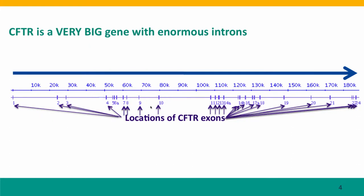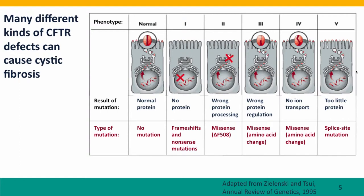The next slide shows the effects of different kinds of mutations on the function of this protein. Starting with a normal individual: no mutation produces a normal protein. The gene is transcribed into RNA, the RNA is spliced into messenger RNA, it's translated into protein, and that protein is then processed through a series of modifications in the cytoplasm before it's finally inserted into the membrane where it can function. In individuals with frameshift mutations or with nonsense mutations — nonsense mutations create stop codons — those cause premature truncation of the protein. Complete protein is not made, and as a result, there's no CFTR protein in the cell membrane.